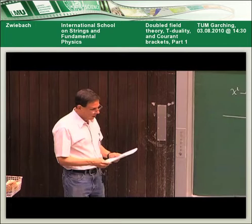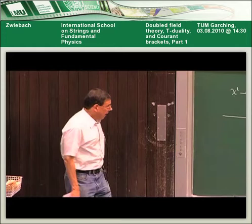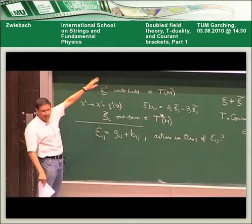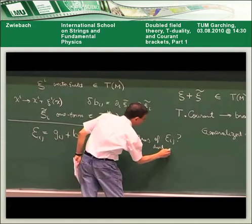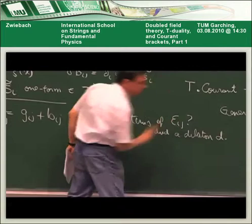Question: why don't you include the dilaton? I will have to include the dilaton as well, yes. So the whole action will have this E_{ij} and the dilaton — not quite the dilaton dφ there, but a dilaton d. I will have a dilaton d, a little different from φ.